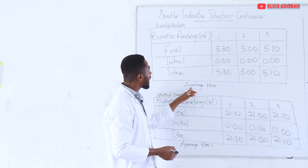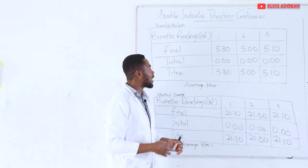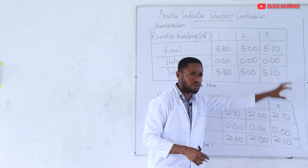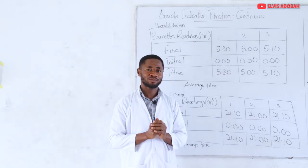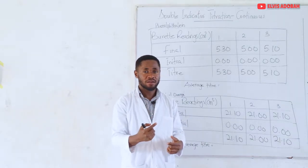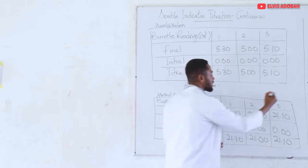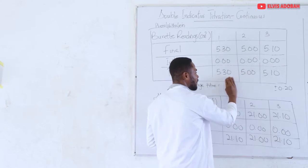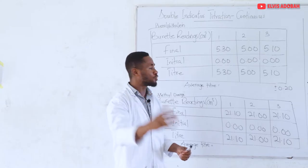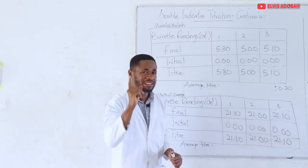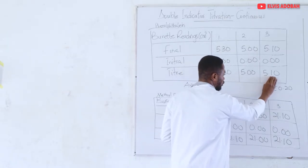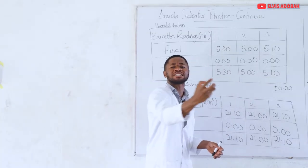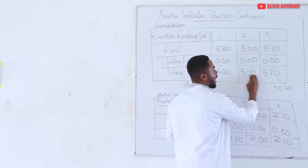We will look for the average titre from the phenolphthalein titration, then the average titre from the methyl orange titration. To find the average, we look for any two titre values that are consistent — meaning they do not differ by more than plus or minus 0.20. Using 5.30 and 5.00, the difference is 0.30, so they would not be consistent. Using 5.30 and 5.10, the difference is 0.20, which is consistent, but I'm choosing the more consistent pair: 5.00 and 5.10.